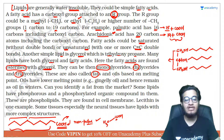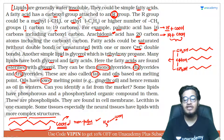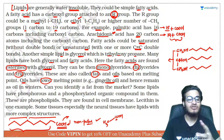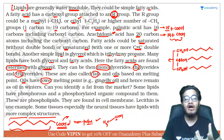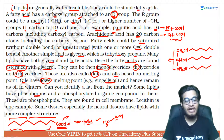Fat और oil में difference melting point का है। Oil का lower melting point होता है, यानि कम temperature पर melt हो जाता है — इसीलिए सर्दियों में भी liquid form में रहता है, जैसे til (gingelly) oil। जबकि fats जैसे घी सर्दियों में जम जाते हैं।